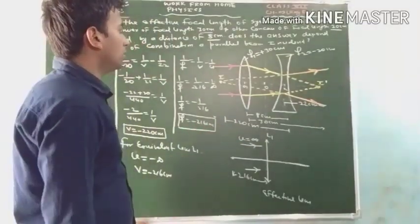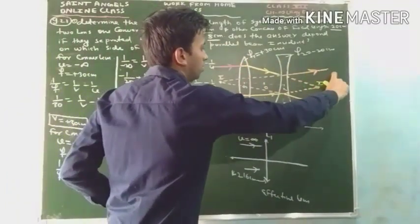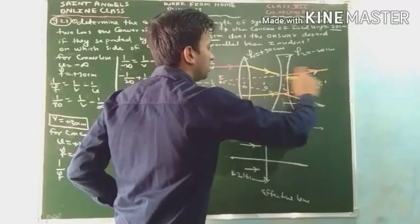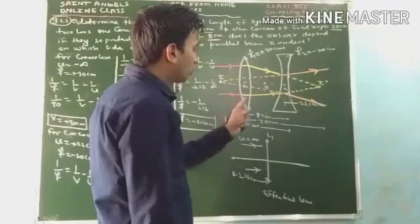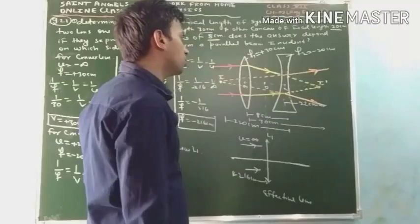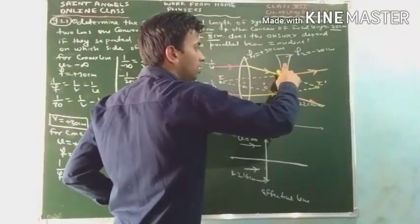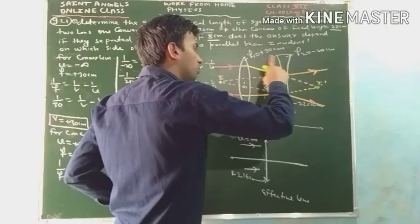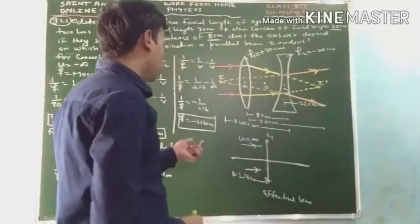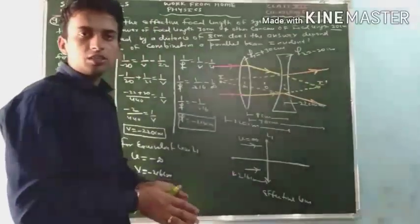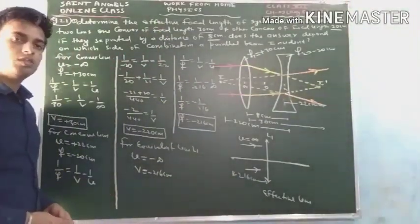Now it is clear that if we reverse the direction of the parallel beam — that is, if the parallel beam is incident on the concave lens first — since the focal lengths of both lenses are different, the position of the image will change. As the position of the image changes, the effective focal length will also change. Please pause the video and note this in your notebook.